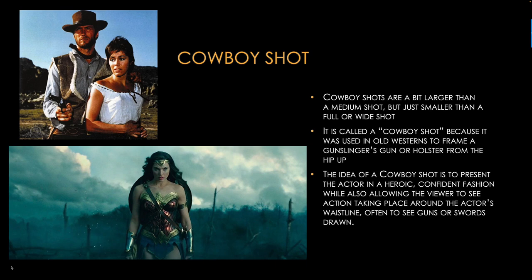A cowboy shot is a little bit larger than a medium shot but smaller than a full or wide shot. It's called a cowboy shot because it was used often in Western films to frame a gunslinger's gun or holster from the hip up — an area of action obviously really important for those films. The cowboy shot is super useful to show a character in a heroic, confident way whilst also allowing the viewer to see more of the environment and action around that character.